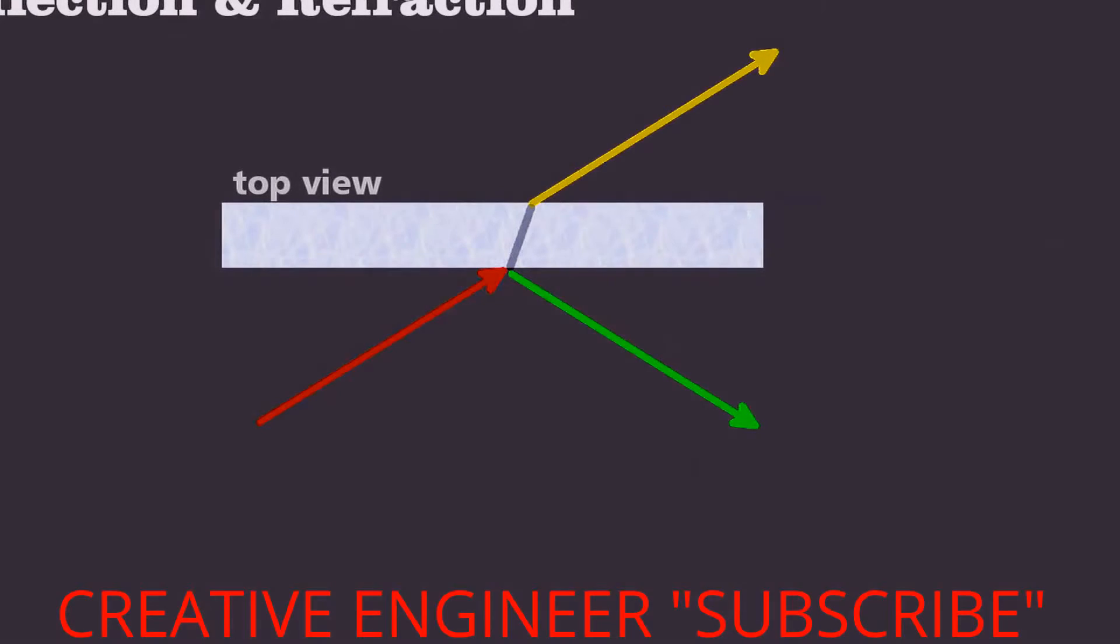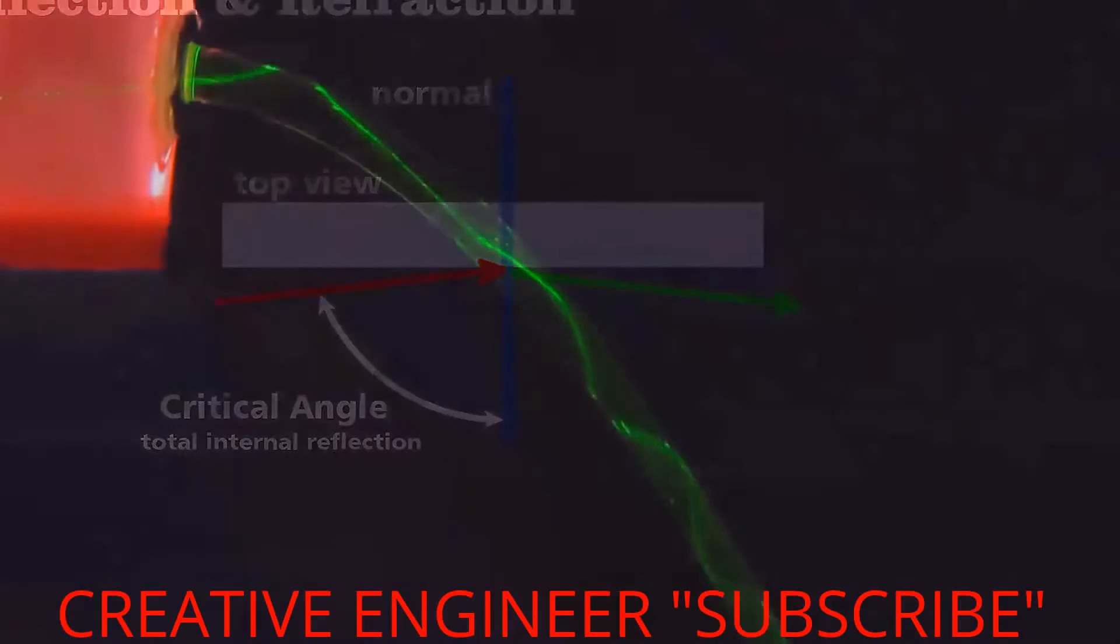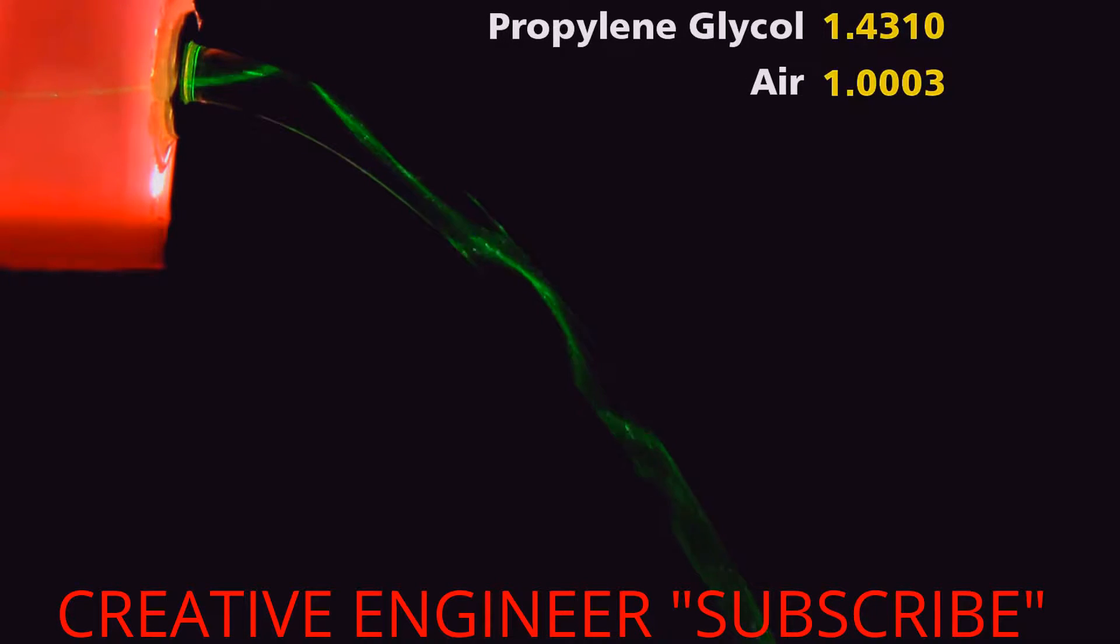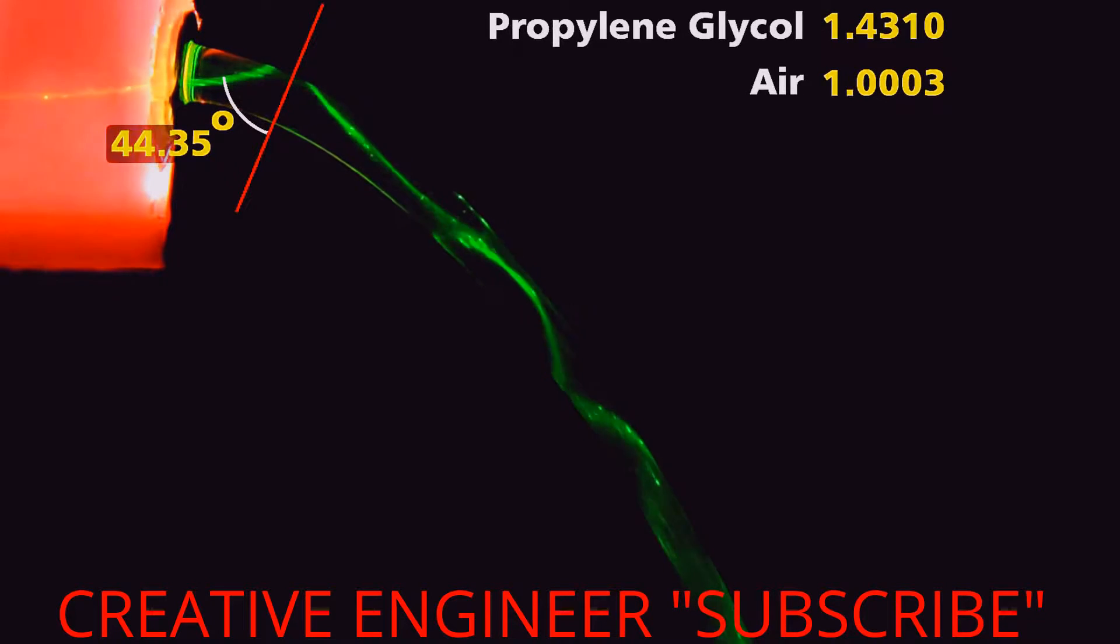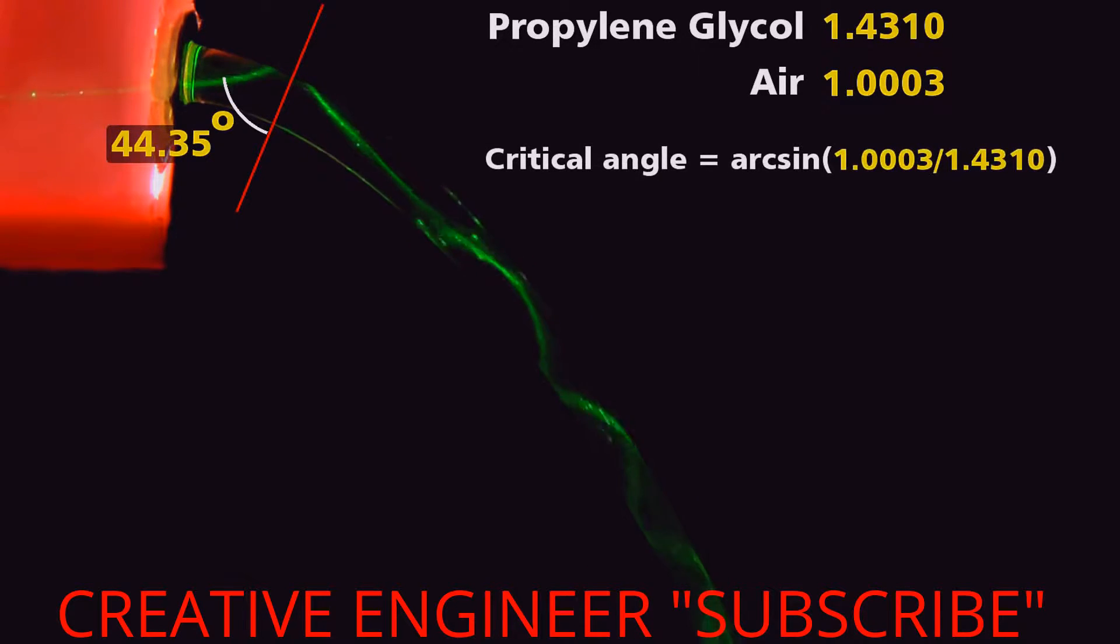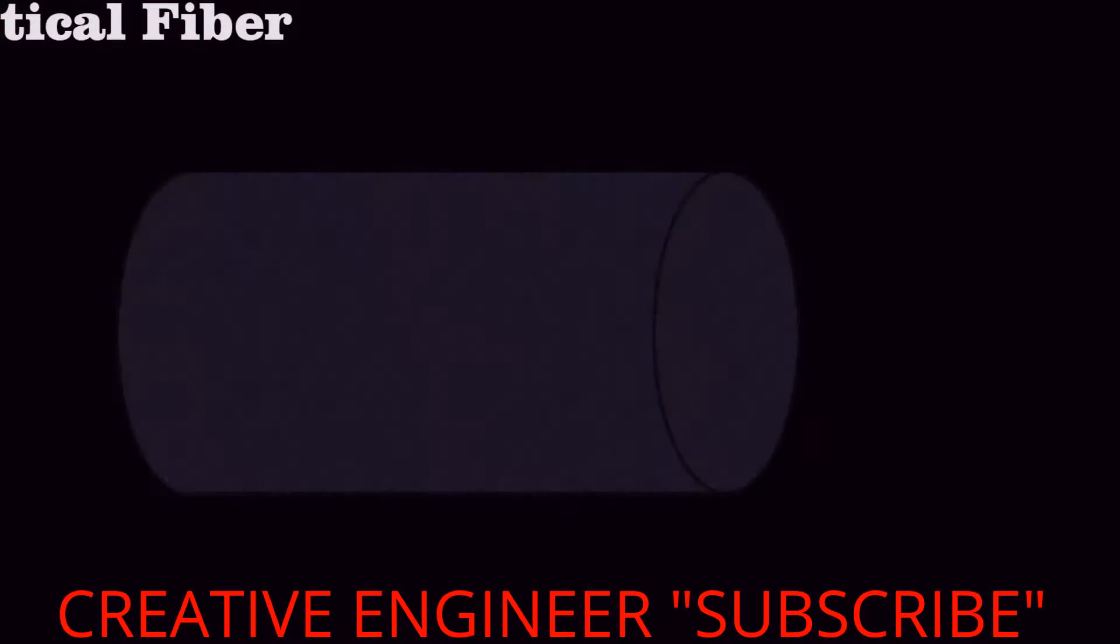Reflection and refraction can happen at the same time, but if a light ray hits the surface at an angle greater than the critical angle, it will be completely reflected and not refracted. For this propylene glycol and air system, as long as a beam hits the surface at an angle greater than 44.35 degrees measured from the normal, it will propagate down the stream via total internal reflection. To create this same effect in an optical fiber,